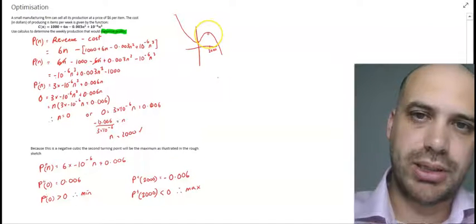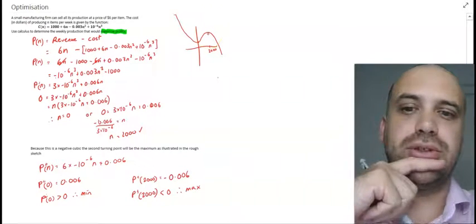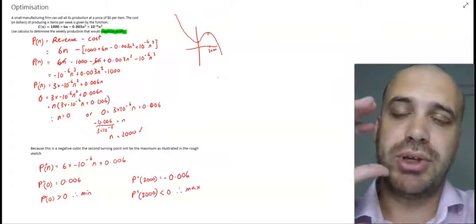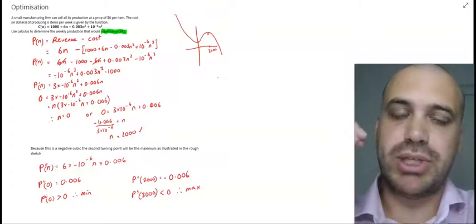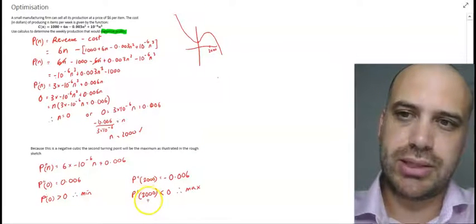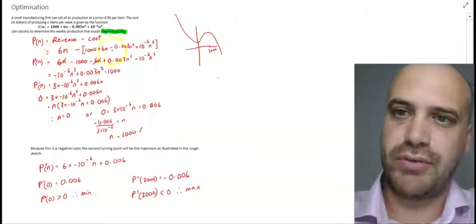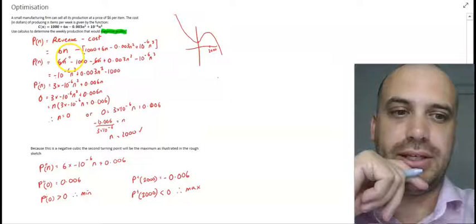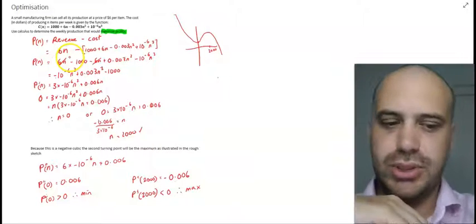Now of course the question didn't ask it, but if the question asked what is the maximum profit, we would sub 2000 back into our profit function here and we'd find out what that maximum profit is. There's an optimization question.